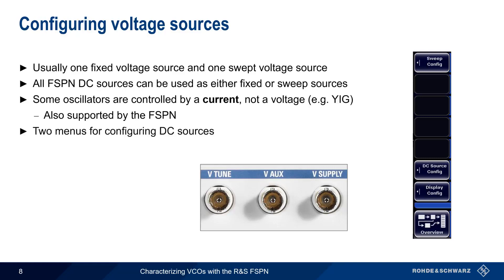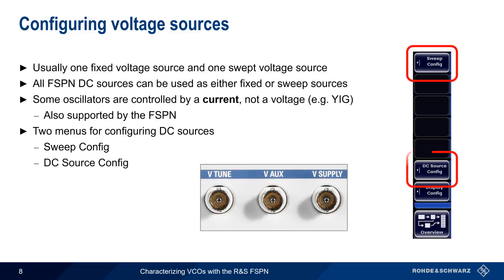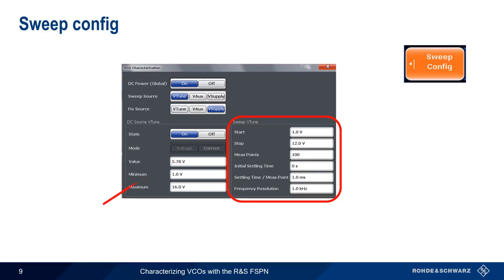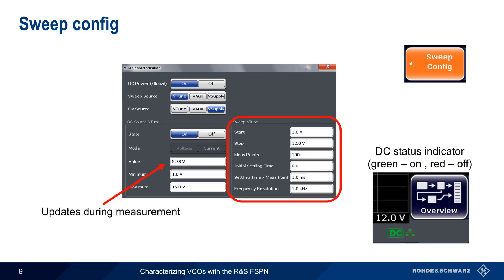Voltage sources on the FSPN are configured using two different menus: Sweep Configuration and DC Source Configuration. Sweep Configuration is where DC power is enabled or disabled globally — all sources are off when the application is started. We also use this dialog to configure which connector provides the fixed supply voltage and which provides the sweep voltage. Under Sweep V-Tune, we input the lower and upper limits of the tune voltage, the number of measurement points, and additional parameters. A DC voltage status indicator in the bottom right corner shows green when DC is on, red when off.